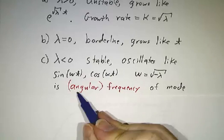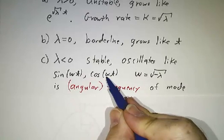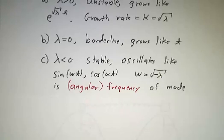And the frequency of oscillation, actually it's the angular frequency, the number of radians per second, is given by the square root of minus the eigenvalue.